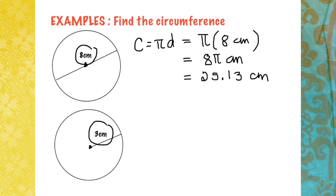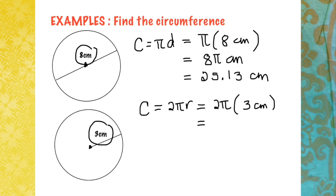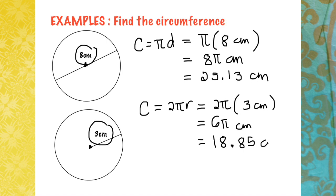In the next example, you are given the radius of 3 cm. Using the formula C = 2πr and substituting the value of our radius, that will be 2 times 3, giving us 6π cm as the exact value. Multiplying 6 by pi — using your scientific calculator or 3.14 — we get approximately 18.85 cm as the estimated circumference.